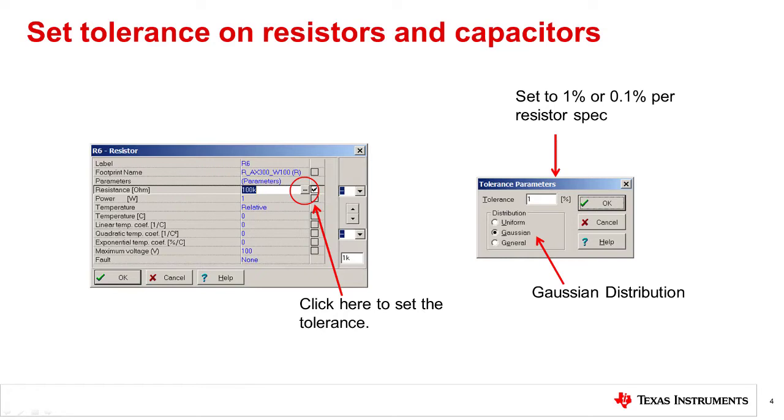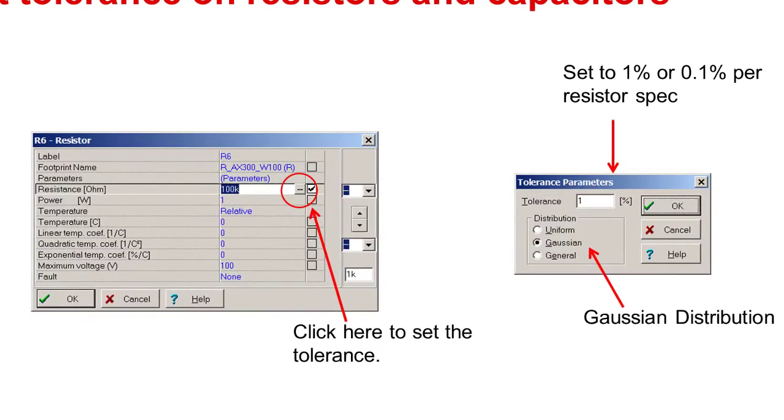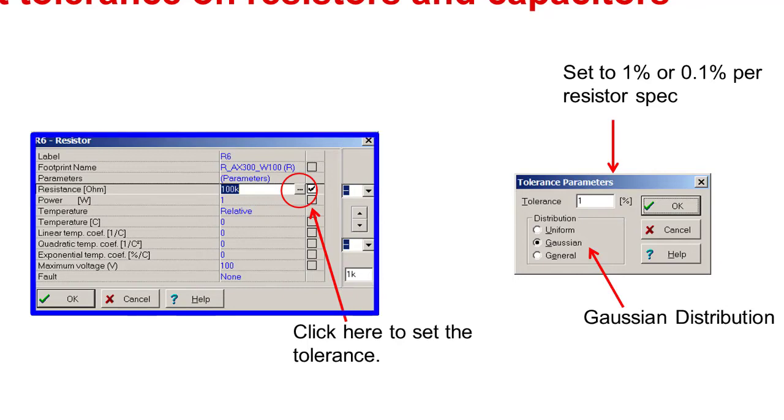Before running the Monte Carlo analysis, you will need to set the tolerance for each resistor and capacitor in the circuit. Just double click on the resistor and a window listing the parameters will pop up.